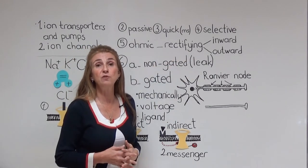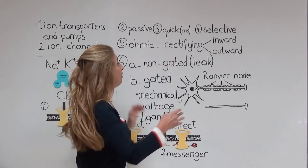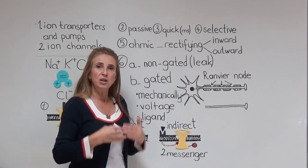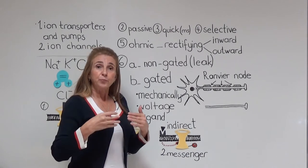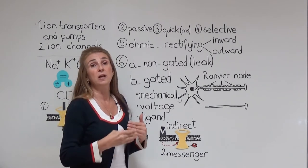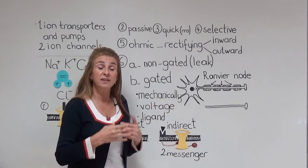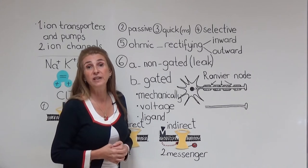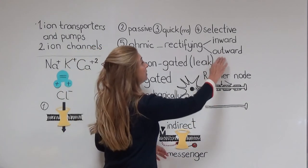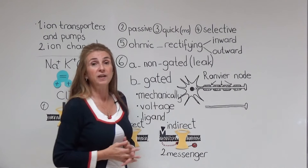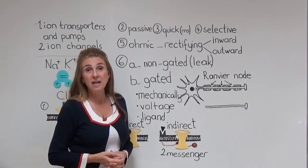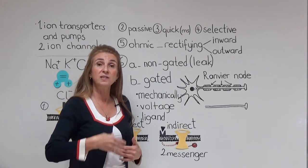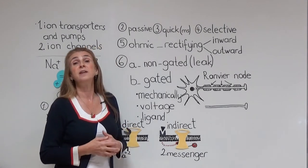Rectifying channels let the passage of ions in only one direction. For example, inward rectifying channels let the passage of ions into the cell when there is a force pushing the ion inward. The second type is outward rectifying channels, which let the passage of ions outward but not inward.